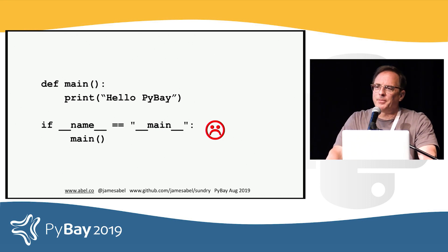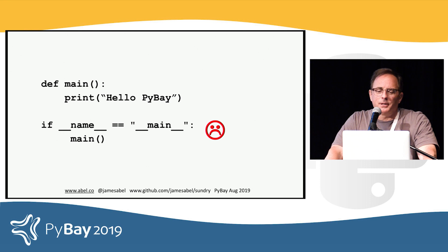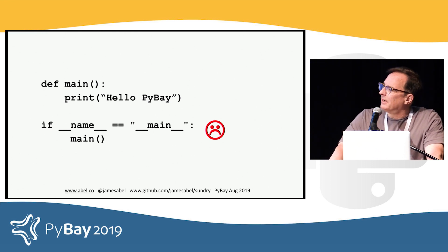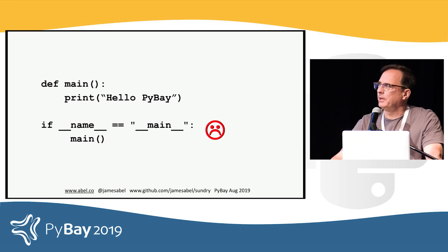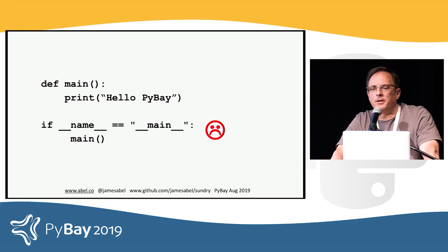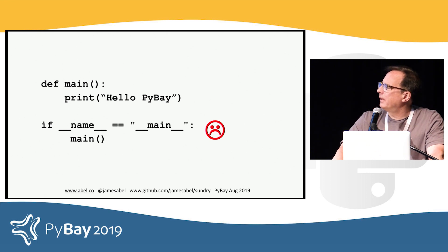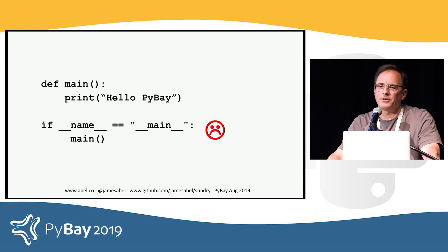What does this do? If you're running a Python application through the interpreter, you might want to put in something that controls what's actually executing, and the way you do it is you check if dunder name is equal to dunder main — that way it will call the main function.